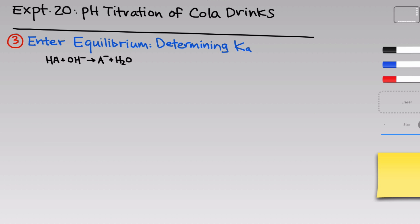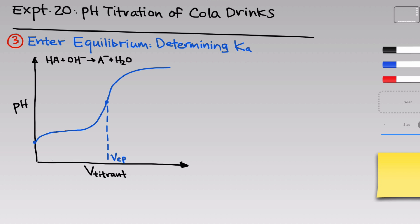One of the nice things about acid-base titrations is that we can learn a lot about acid-base equilibrium by studying the shape of the titration curve and some special points along it. Drawing up the curve for titration of a weak acid with a strong base like hydroxide: initially, before any titrant is added, most of what's in the analyte solution is undissociated HA, because HA is a weak acid. There will be a small amount of A⁻ and a corresponding small amount of hydronium ion from dissociation of HA.